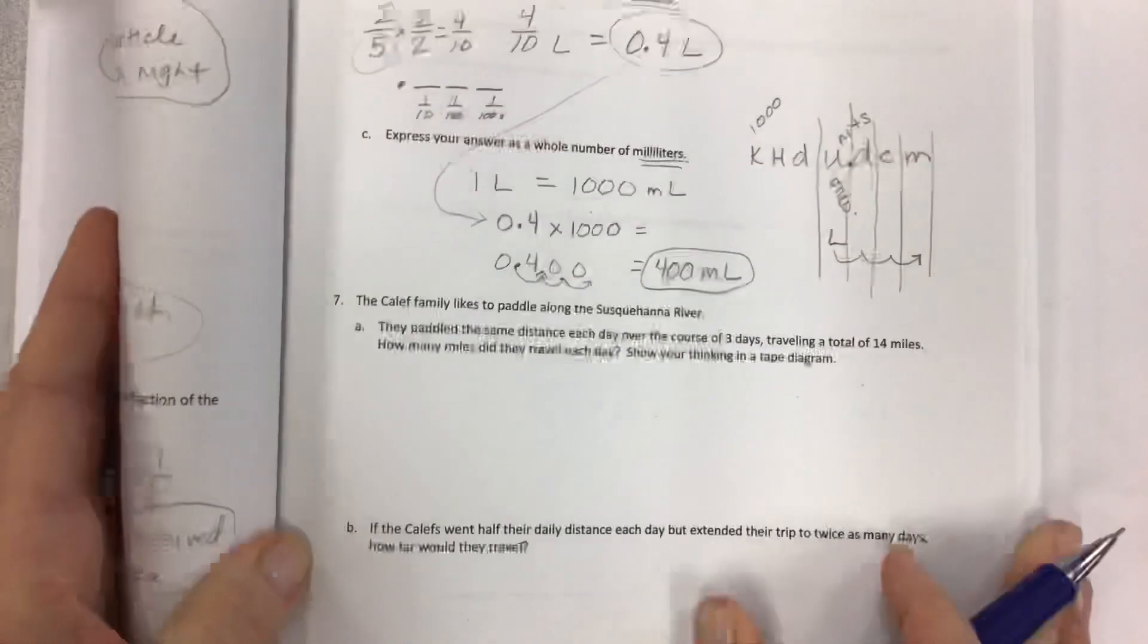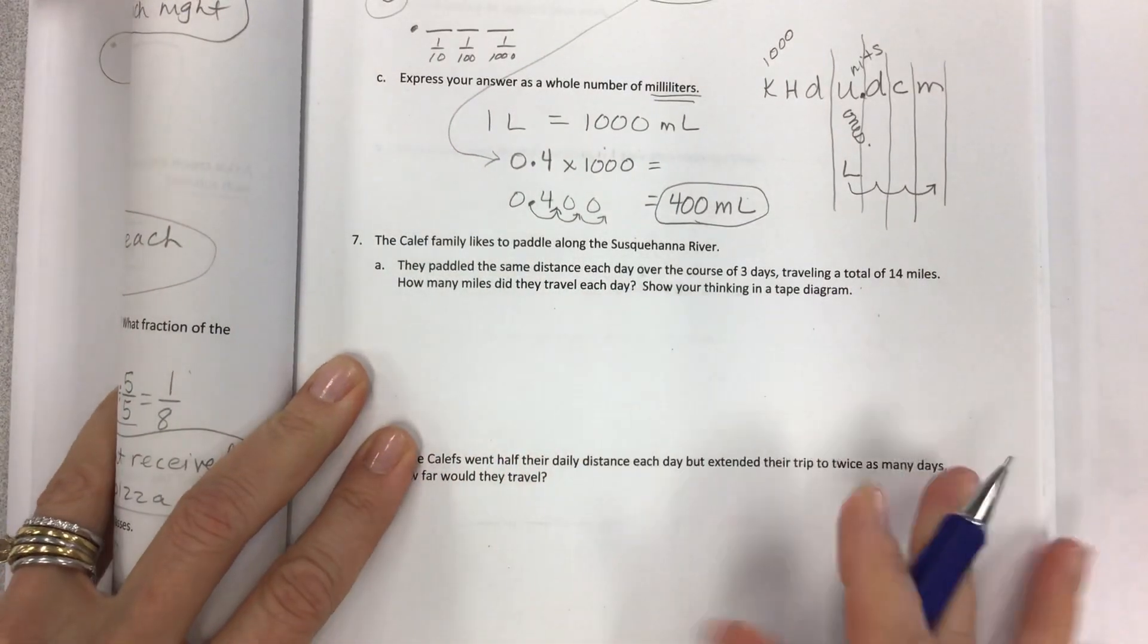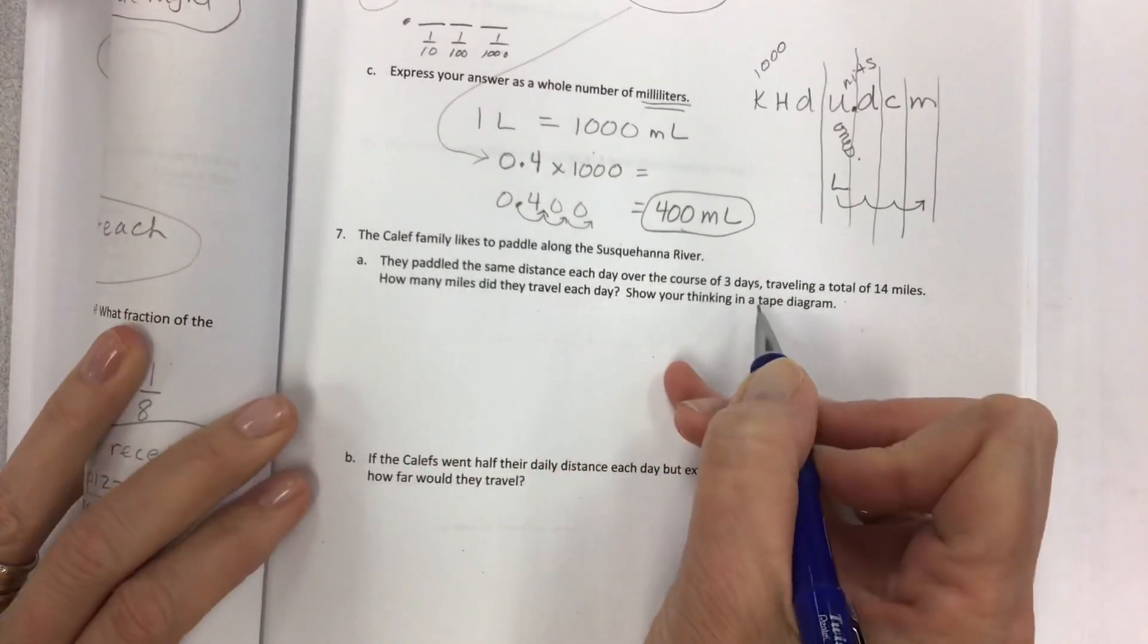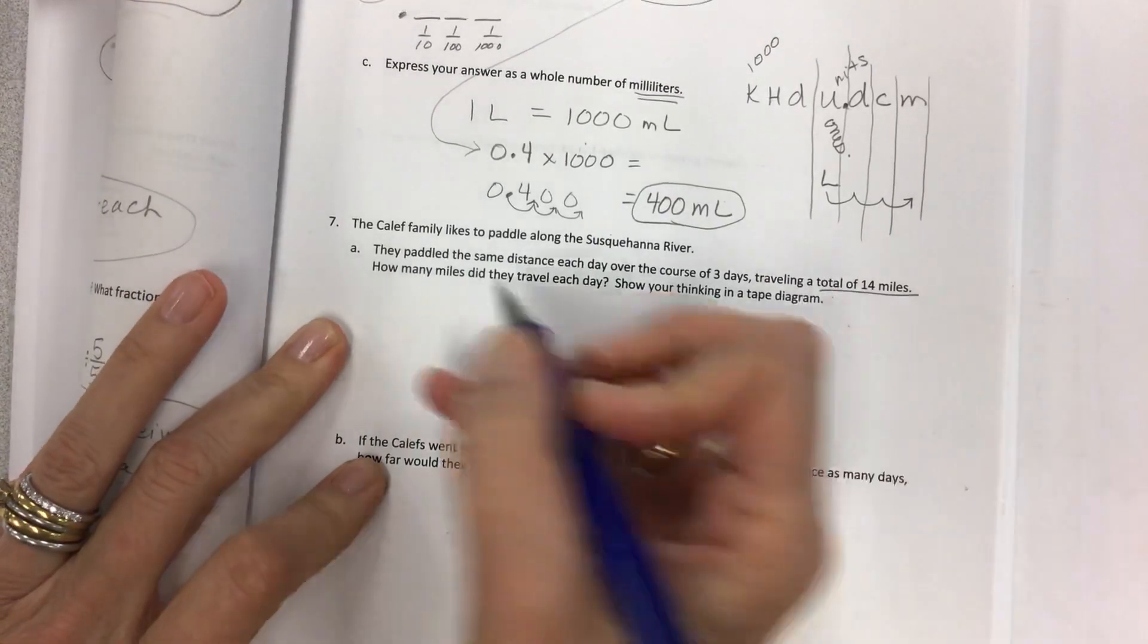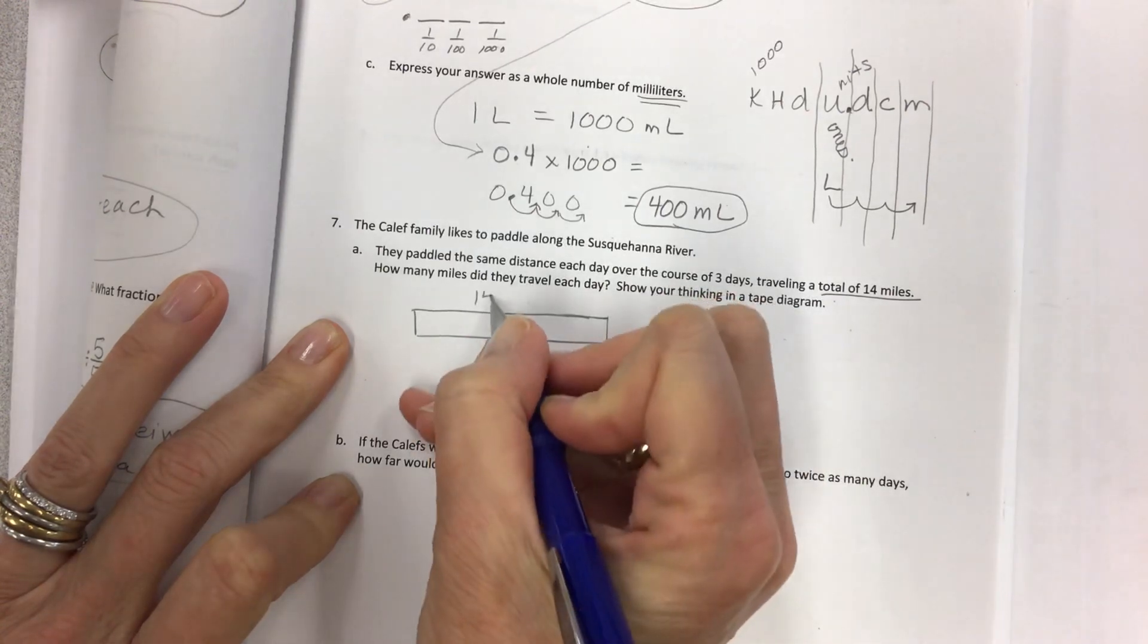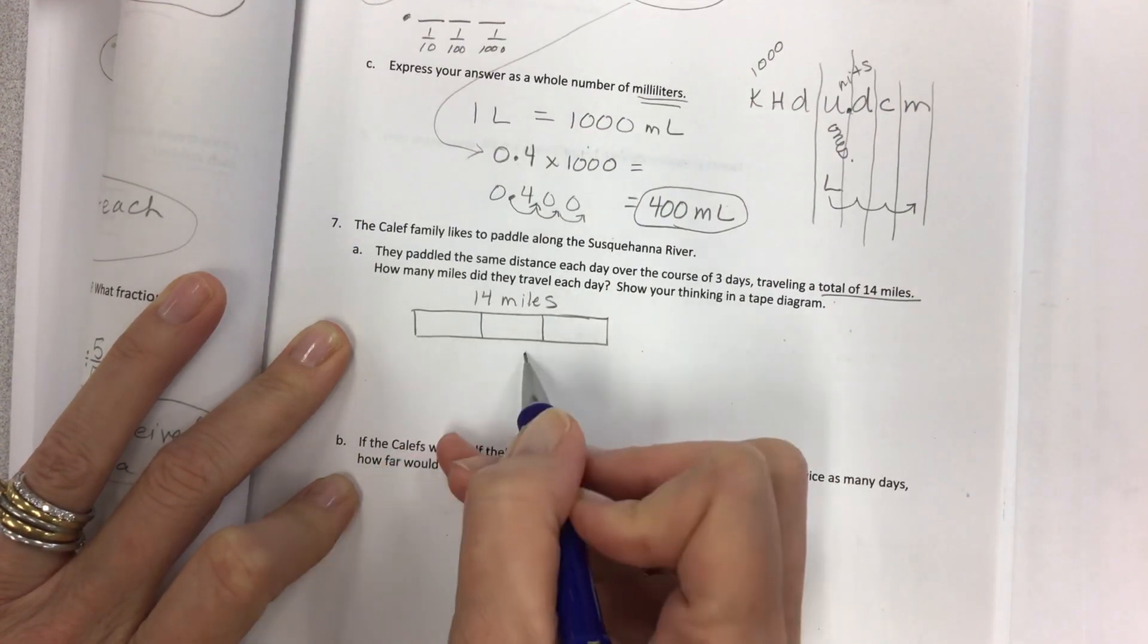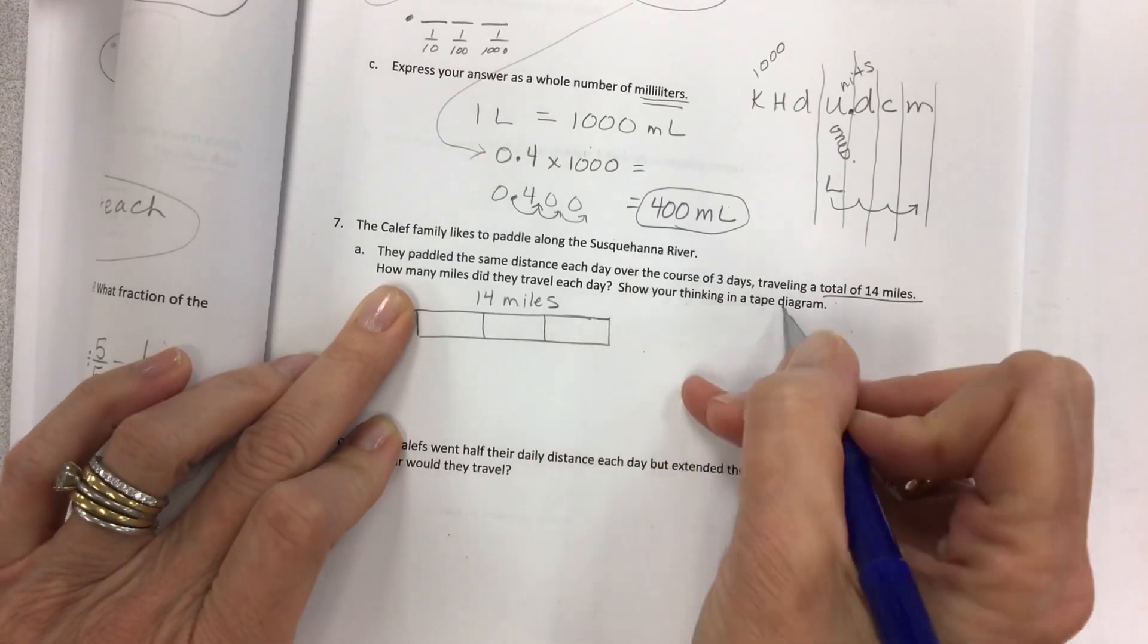And finally, we're doing so good on time. The Califf family likes to paddle along the Susquehanna River. They paddled the same distance each day over the course of three days, traveling a total of 14 miles. They gave us a nice total here. A total of 14 miles. And it's three days. One, two, three. Day one, day two, day three. So how many miles did they travel each day?